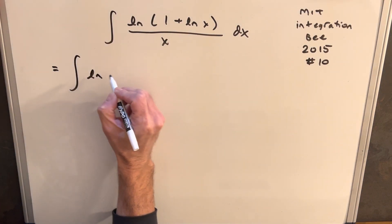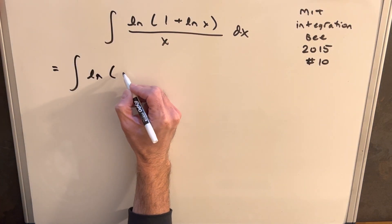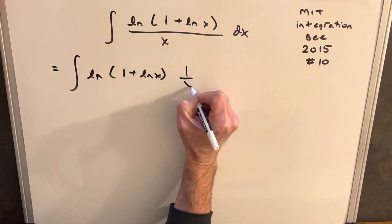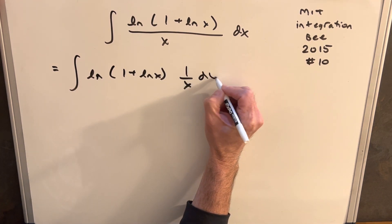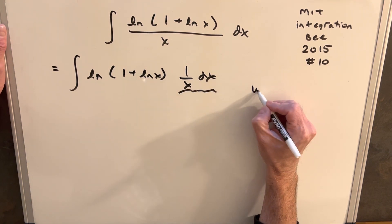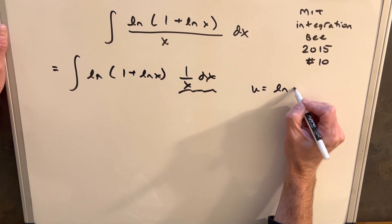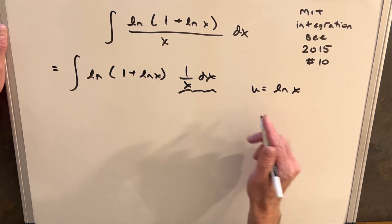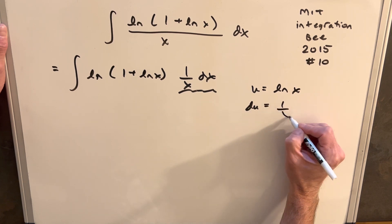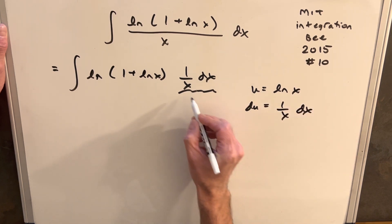Just to make this clear, I'm going to rewrite this in a way where we can see it. So we'll have ln of 1 plus ln x times 1 over x dx, so that we want this to be our du here. So we're going to set our u equal to ln of x. Then taking the derivative, du equals 1 over x dx. So there's our du.